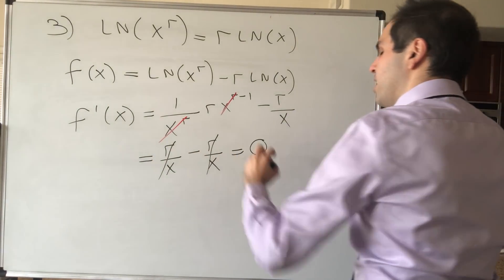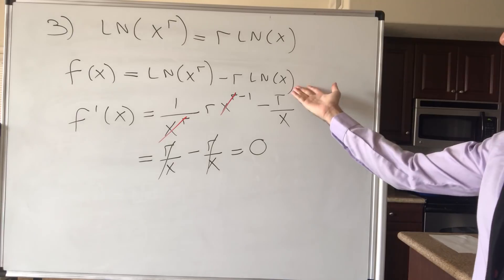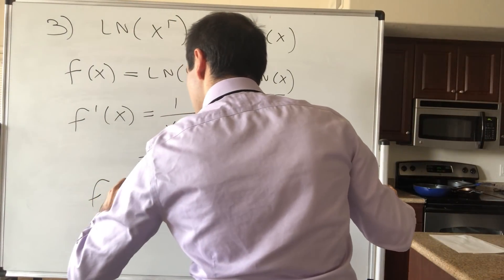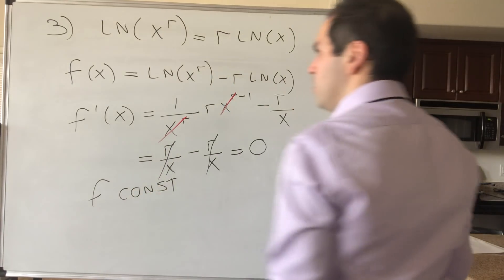So this just becomes r over x minus r over x, this cancels out, and you get 0. And therefore, again, f is constant.